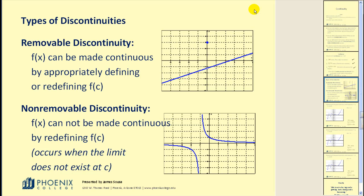This first function is really only discontinuous at one point. If I were to take this point and move it back down into position, it would then make the function continuous. This is called removable discontinuity. F of x can be made continuous by appropriately defining or redefining f of c.